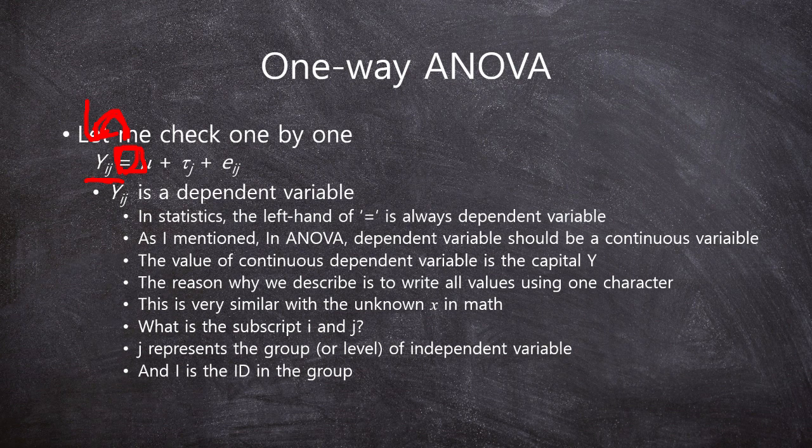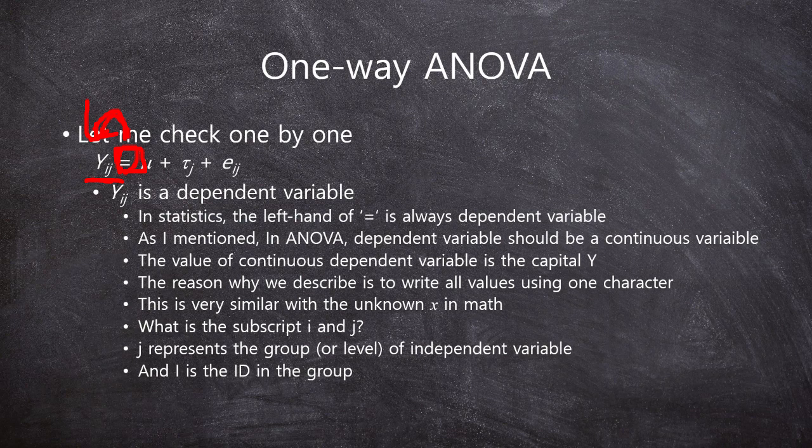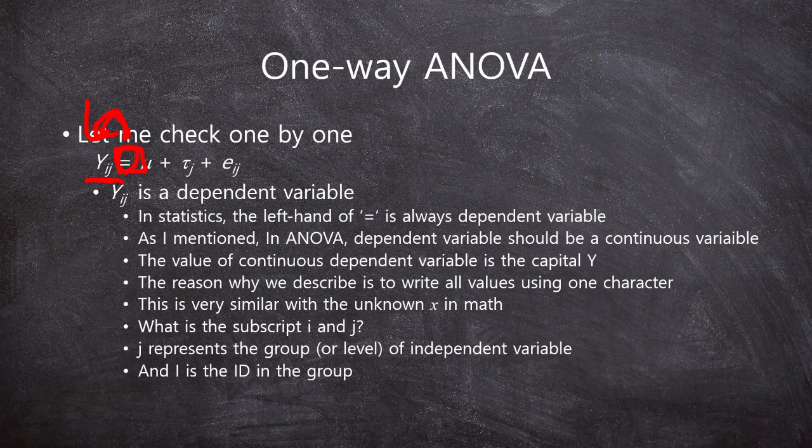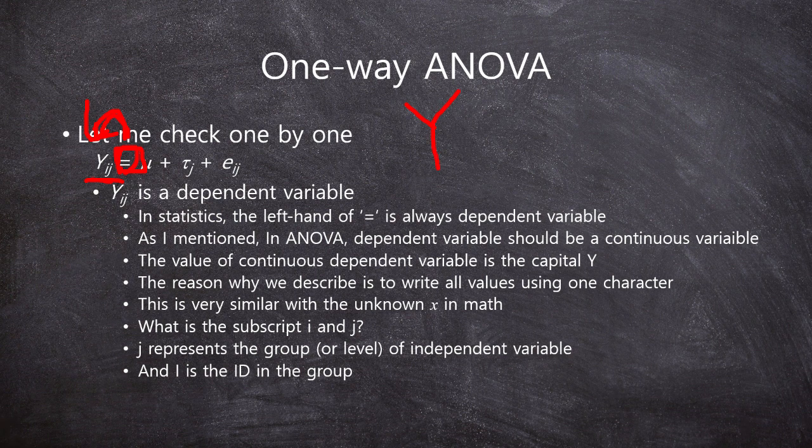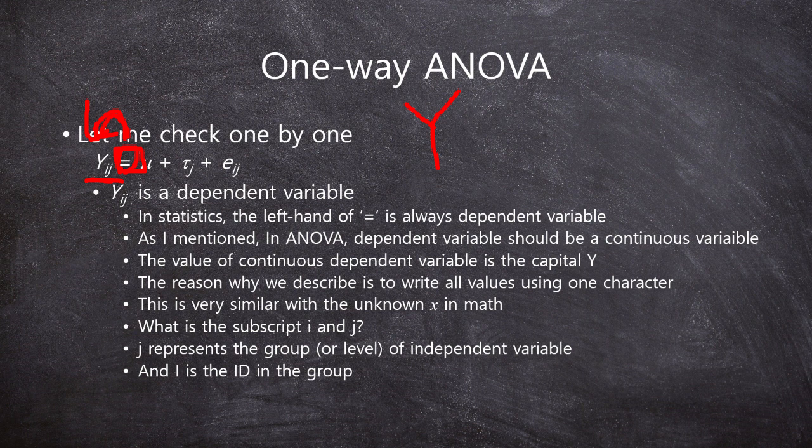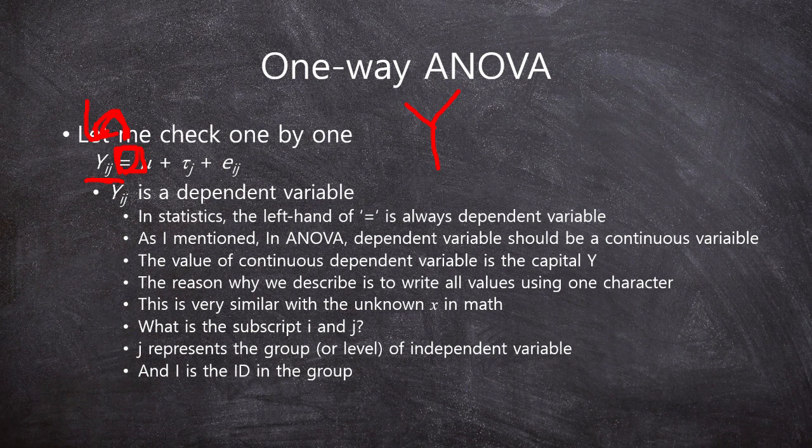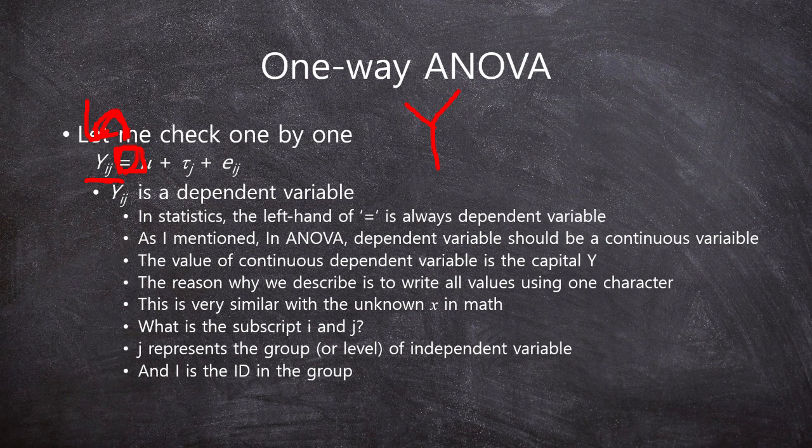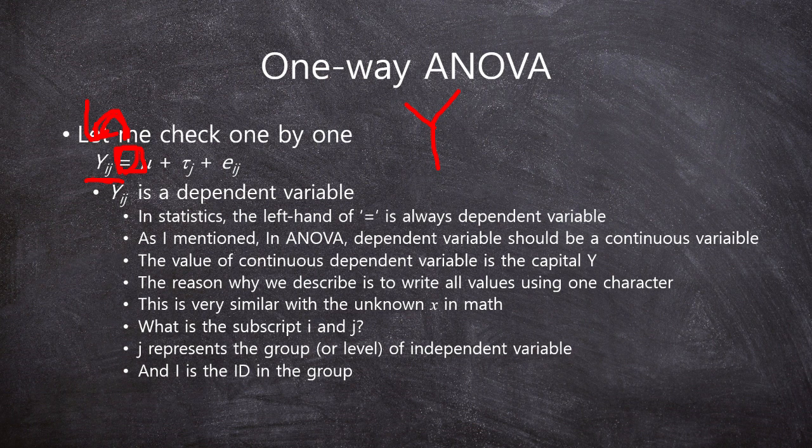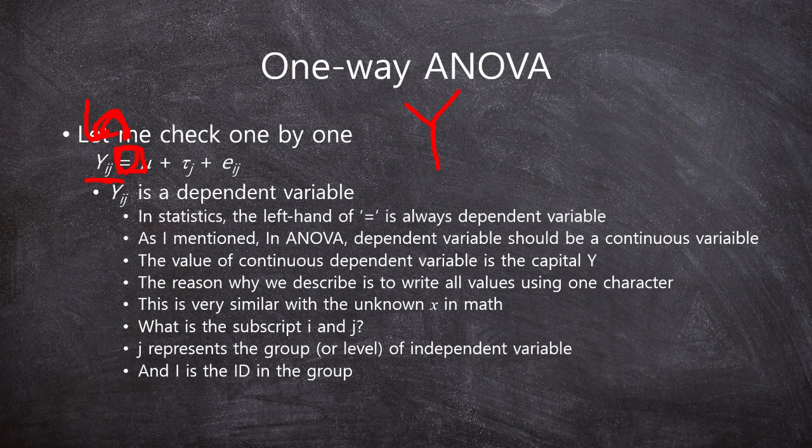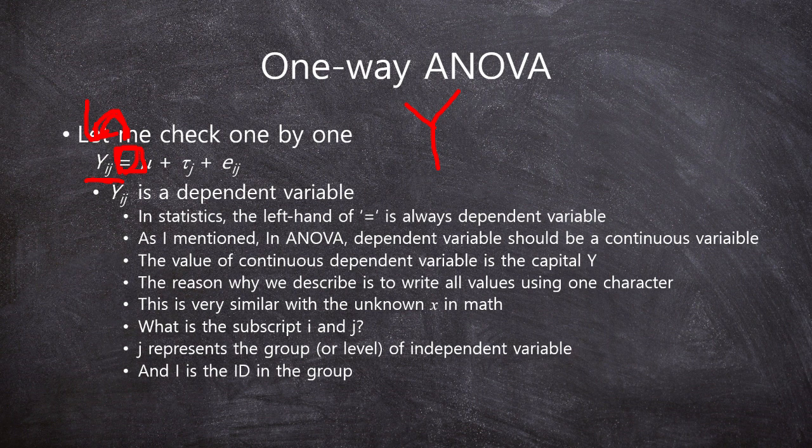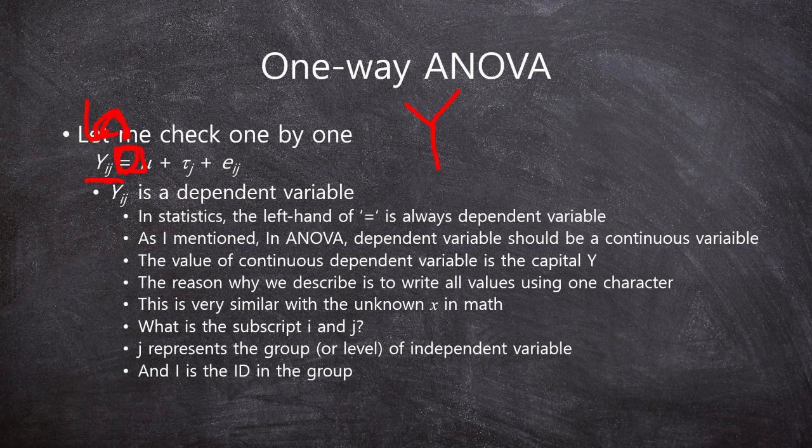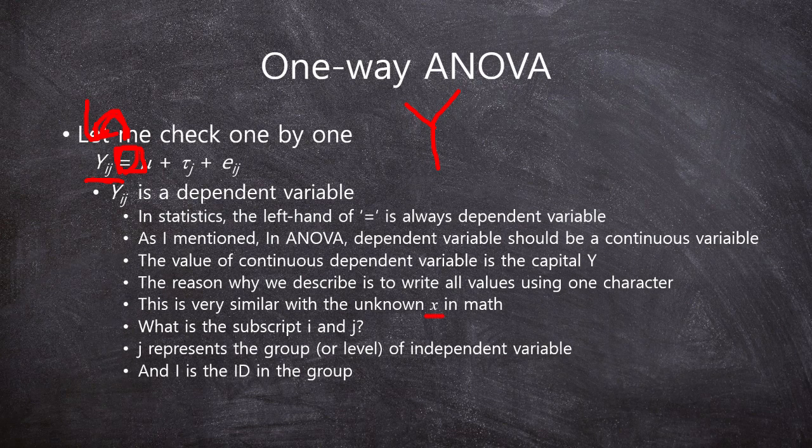As I mentioned, in ANOVA, dependent variable should be a continuous variable. And the value of a continuous dependent variable is the capital Y. This is a dependent variable. And the reason why we describe like this is to write all values using one character. We have many observations of Y. And we have many observations of tau. But the scholars just want to describe the multiple numbers into one character like this.